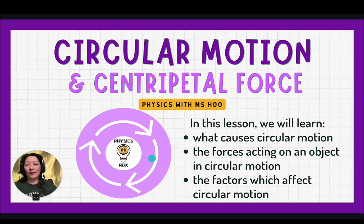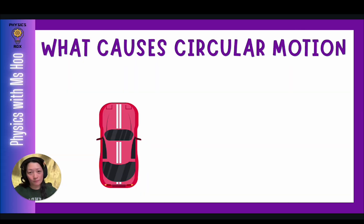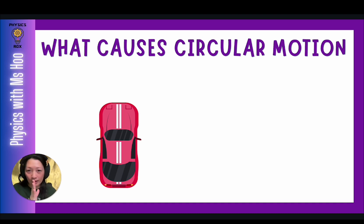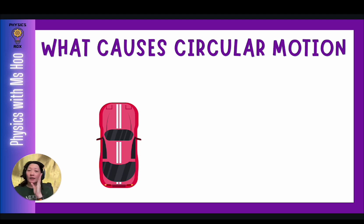First of all, let's learn what causes circular motion. One thing you must understand about motion is that when an object is moving, the direction of the object is always linear — always either forward or backward, or side to side in a linear fashion. Circular is not a direction, so an object can move in a circular fashion, but the direction is constantly changing throughout that circular motion.